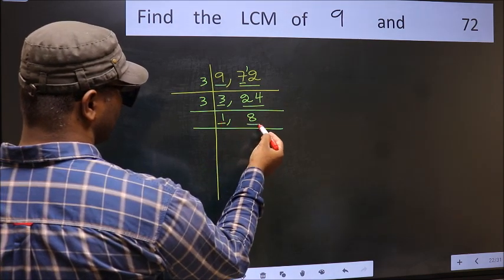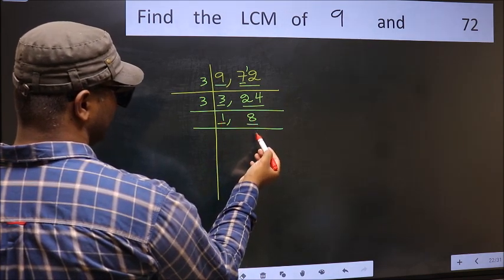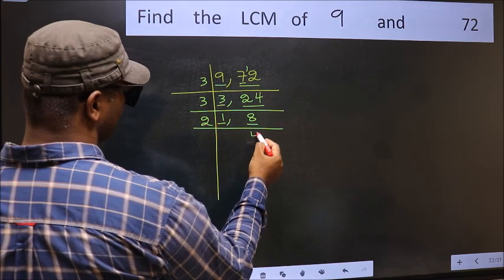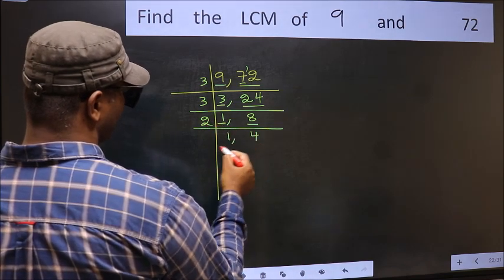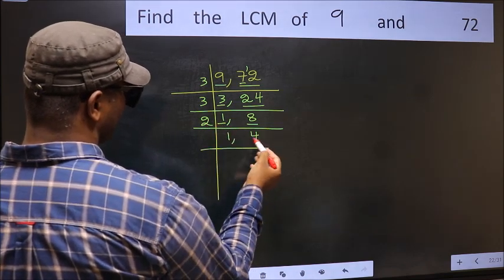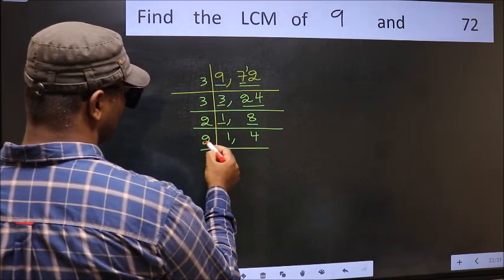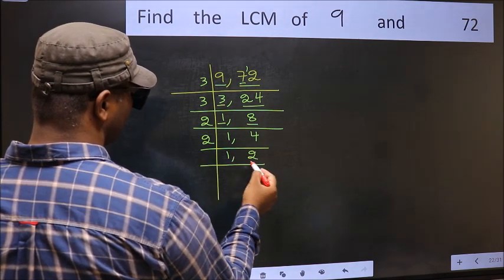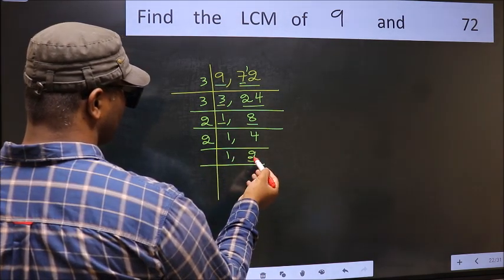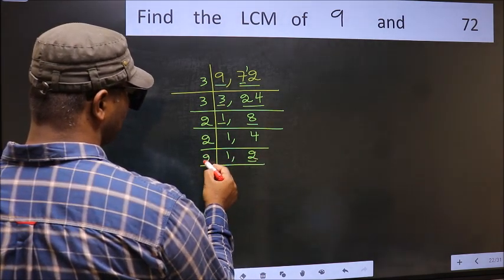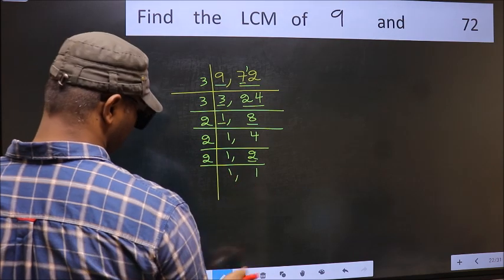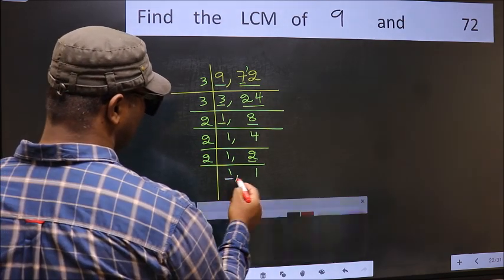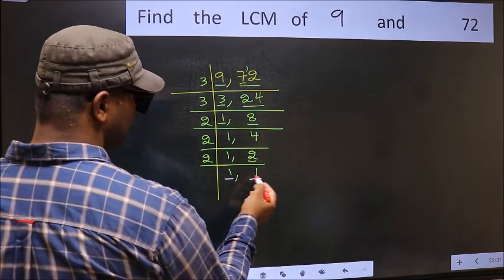Now we got 1 here, so focus on the next number, 8. 8 is 2 times 4. Now 4 is 2 times 2. Now 2 is a prime number, so 2 times 1 is 2. We got 1 in both places.